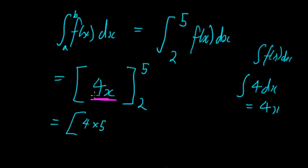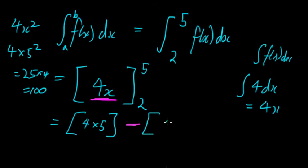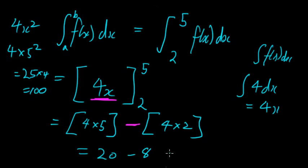Whatever the function is inside, we substitute the terminal value in as x. So if it were 4x squared, we'd get 4 times 5 squared, which is 25 times 4 equals 100. But here it's 4x with 5, so it gives us 20. Then we minus 4 times 2 — substituting x=2 — and this gives us 20 minus 8, which equals 12. So that area would be 12 units squared.